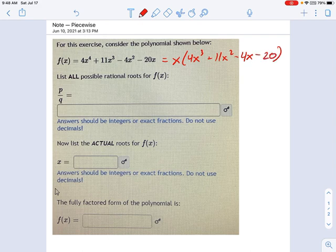So right off the bat, this thing that looked like a degree 4 polynomial is really only degree 3. That's great. And now you use p of 20, so this is factors of 20 divided by factors of 4.